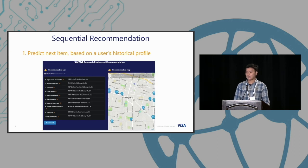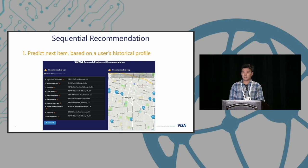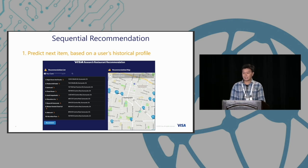At Visa, we also have some recommendation system interests. If somebody is using the Visa credit card and purchases something at a restaurant, we might have their transaction record. For example, we might try to predict which restaurant this user might be interested in next.